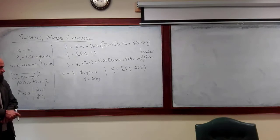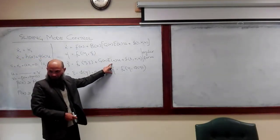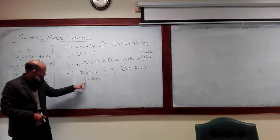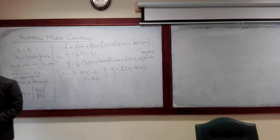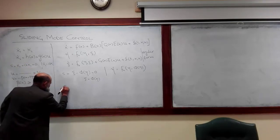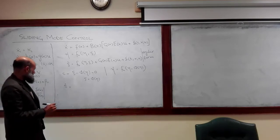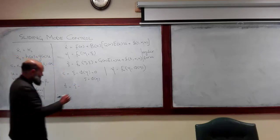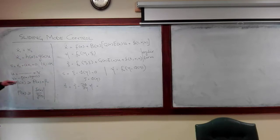On the sliding surface, since phi of eta has been appropriately selected, these dynamics are asymptotically stable. Since eta is asymptotically stable, zeta will also converge to the equilibrium point. So on this sliding surface, the trajectories will automatically converge to the equilibrium point. Now, we need a control law that will bring any initial condition to the sliding surface. We find S-dot — which is zeta-dot minus the partial derivative of phi over partial eta times eta-dot — similar to the strategy used in the simpler case.